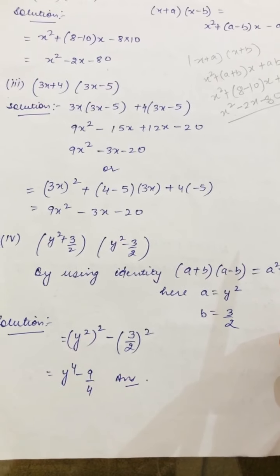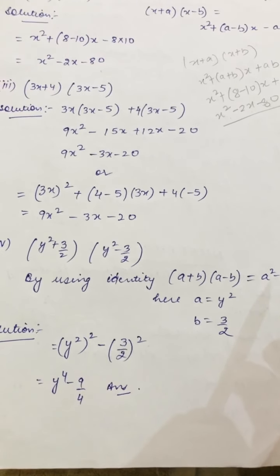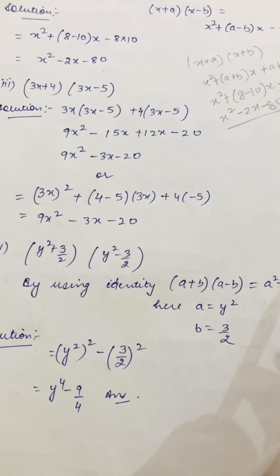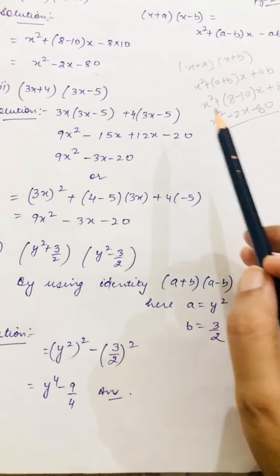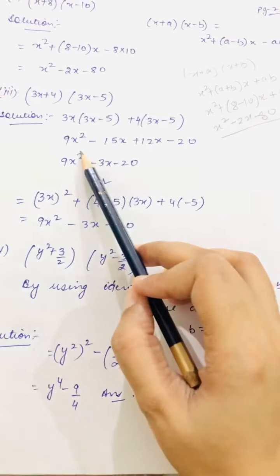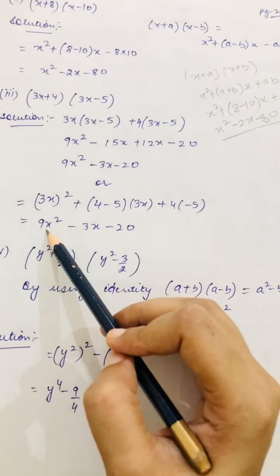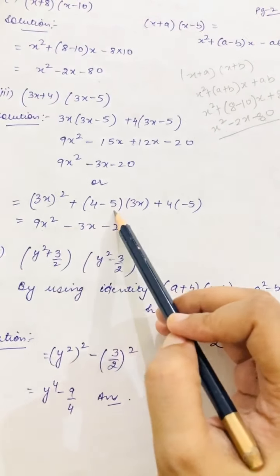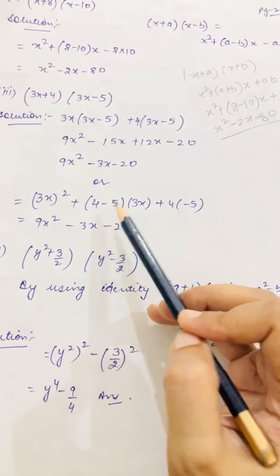What is a? A is 8. What is b? B is -10. So what does it mean? x² - 2x minus 80, and plus minus is minus. So what will this become? x² - 2x - 80. Check, the answer is the same. Now third. What is in the third question? (3x+4)(3x-5). x is the same, right? You have to check which property has the same x. What is x? It's 3x.